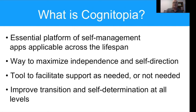I'm going to show you just a handful of slides to give you a quick overview of what we're doing, and then we'll switch over to using the apps and demoing some basic elements of each of those applications. Cognitopia is a platform of self-management applications designed to be applicable across the lifespan. Our grant funding was focused on transition-aged individuals in high school and 18 to 21 years old who are moving into adulthood, but we now have users as young as nine years old, and a number of adults as well.